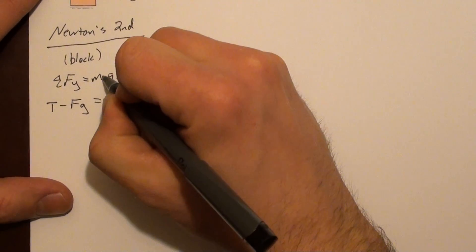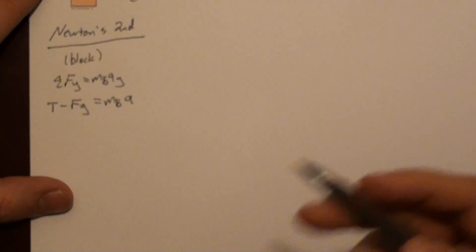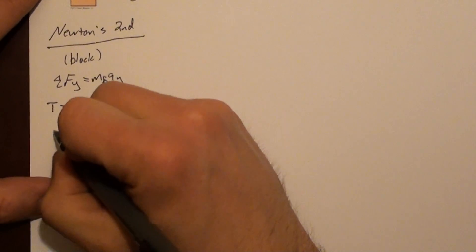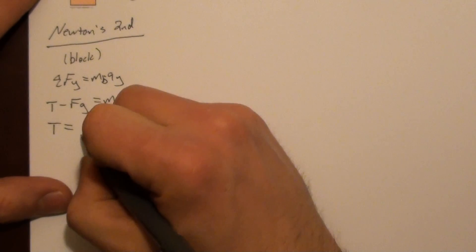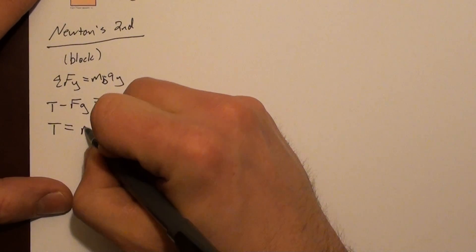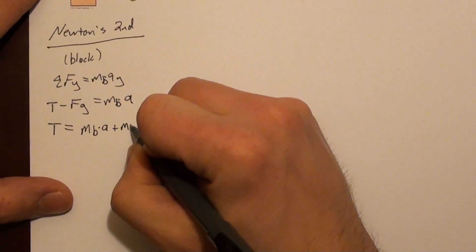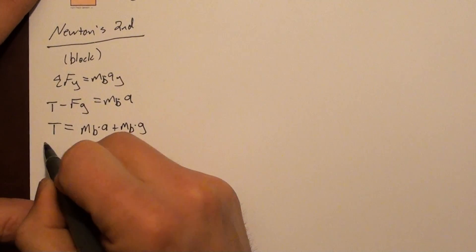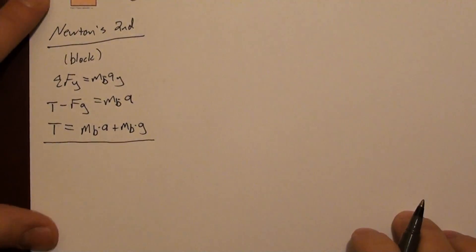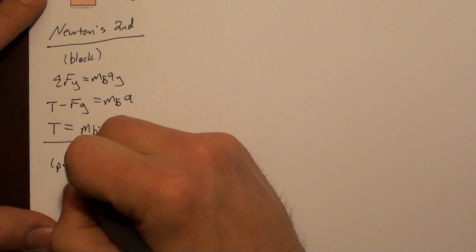So I'm going to solve this for the tension. Also, I'm going to make sure to label this as the mass of the block, because we have two objects with mass in this problem. So tension equals mass of the block times acceleration of the block plus mass of the block times g. So there's one equation.